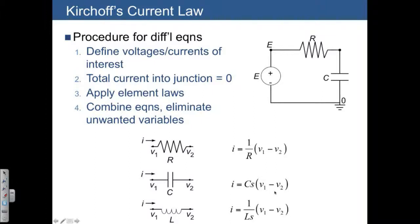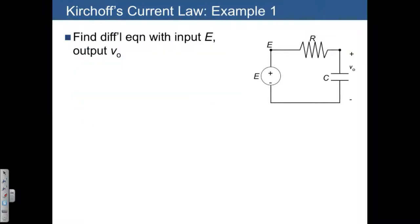So let's do this first example with a resistor and a capacitor. We start by defining voltages and currents of interest. First, we have the voltage at the junction here, which is just going to be equal to V0 because of the definition of the voltage across the capacitor.